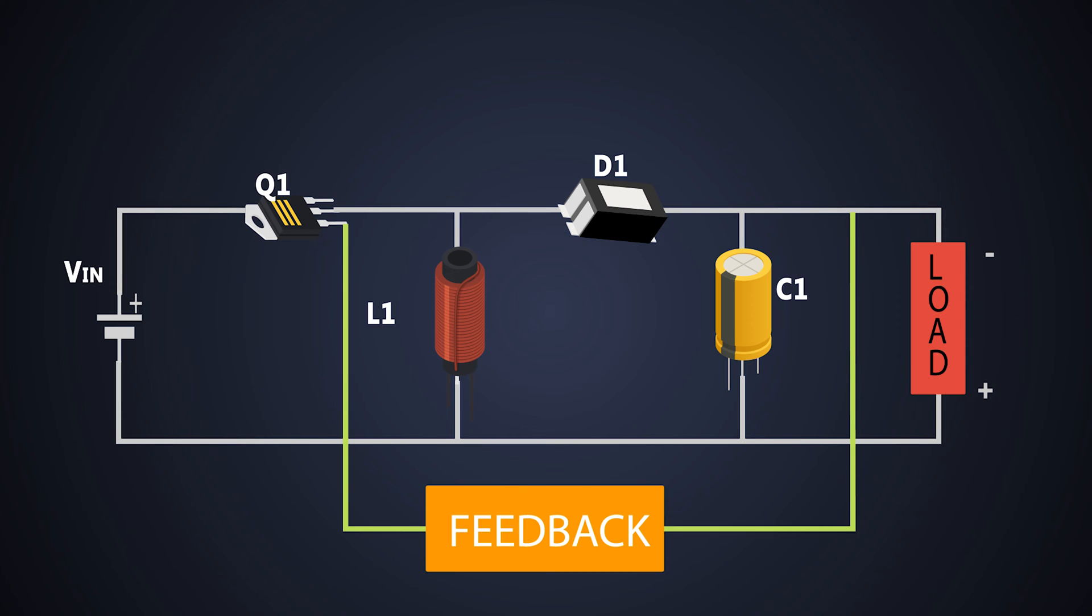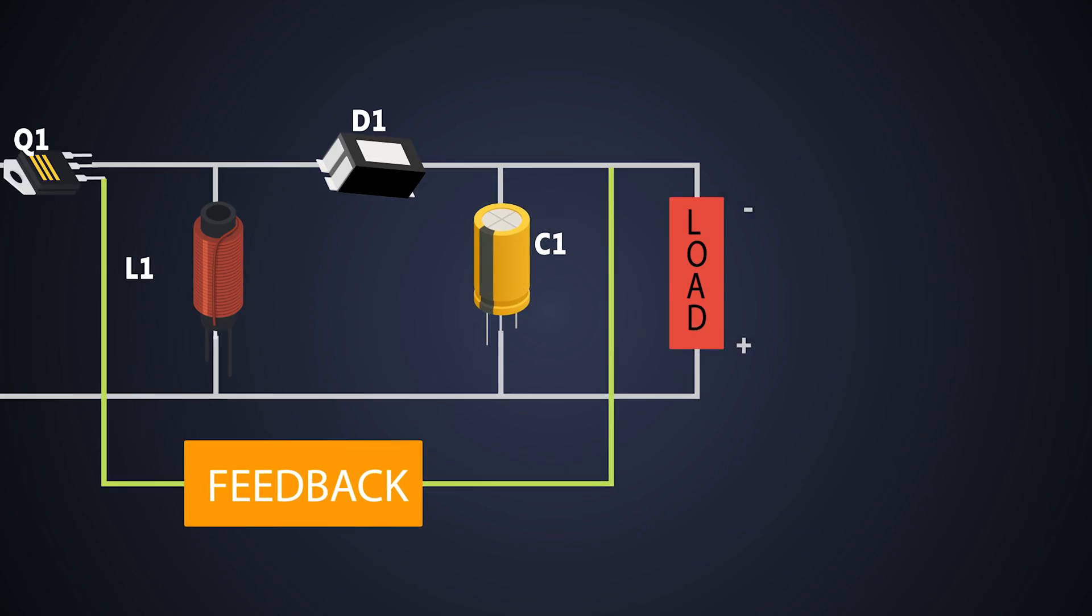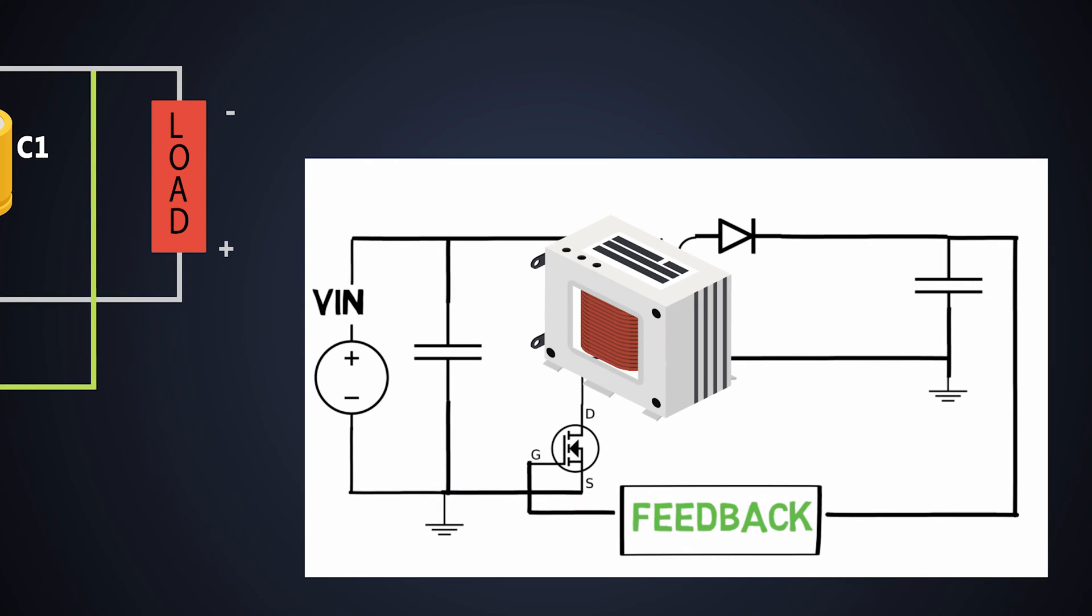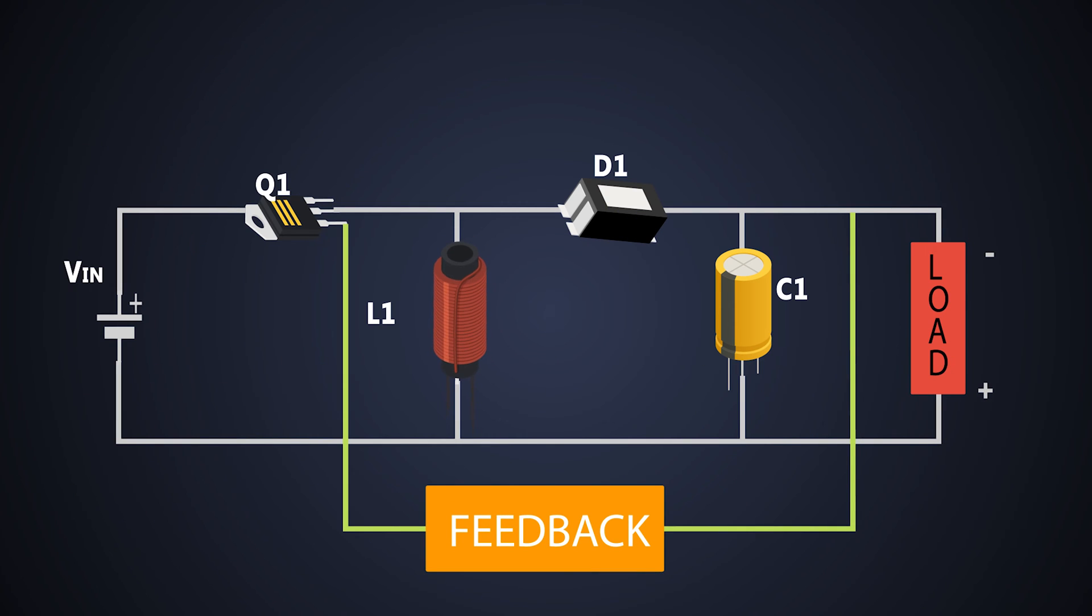The construction of the buck-boost converter is just like the flyback converter, but instead of using a transformer, it only has an inductor. The formula of the output voltage is given like this. Here, the negative sign shows that the polarity of the output voltage is reversed.